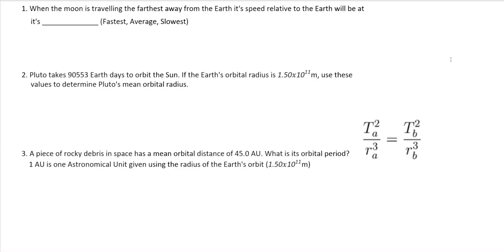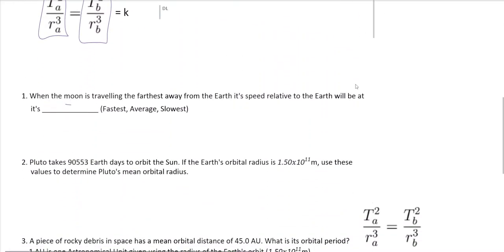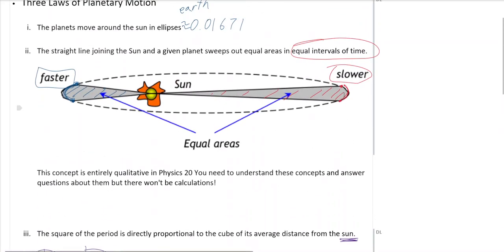So for this first one, it's just based off of the second law, which is when the moon is traveling the furthest away from the earth, the speed relative to the earth is at its slowest. Because it's further away, it must be traveling at its slowest. So that's based off of this rule over here. It's further here, so it's traveling slower. It's closer, so it must be traveling faster.